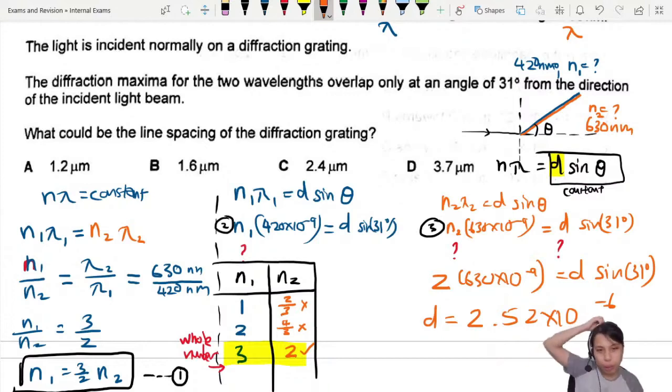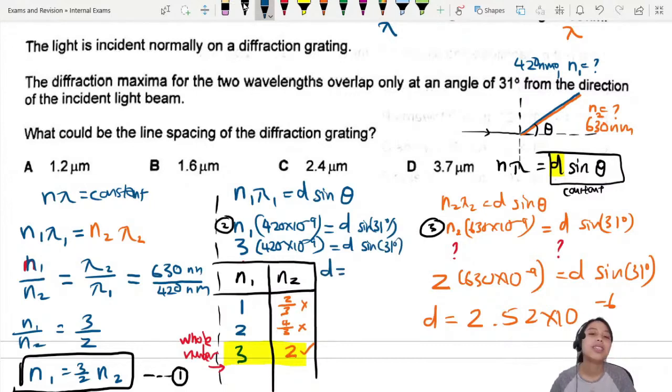I think maybe I should try the blue color one just to double check. Let's check n1. It's a bit crowded here. If this is 3, this is 420 times 10 to the negative 9 equals d sine 31. If I use that, what would be my d? Press calculator: 3 times 420 times 10 to the negative 9 divided by sine 31. 2.446, okay, I'll just put 2.4.